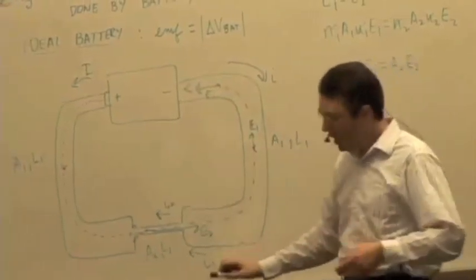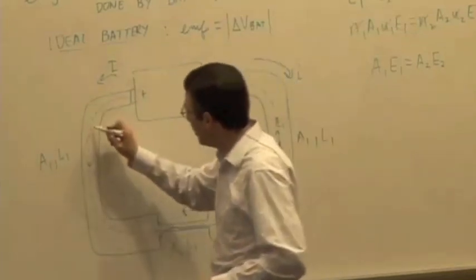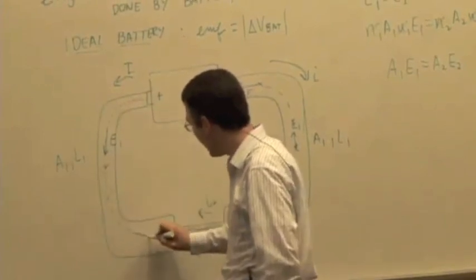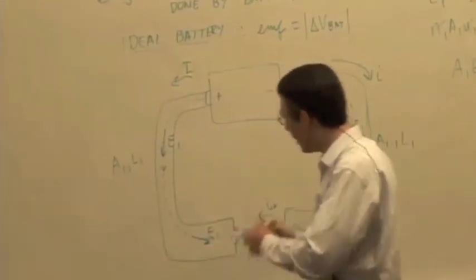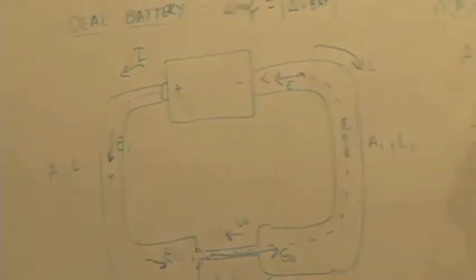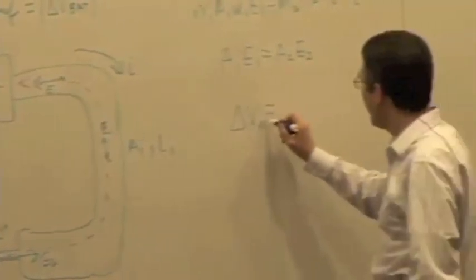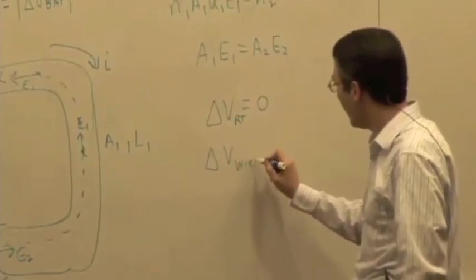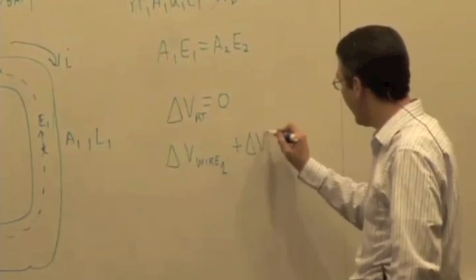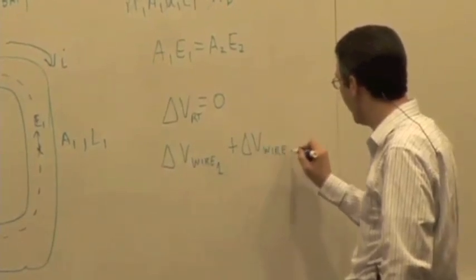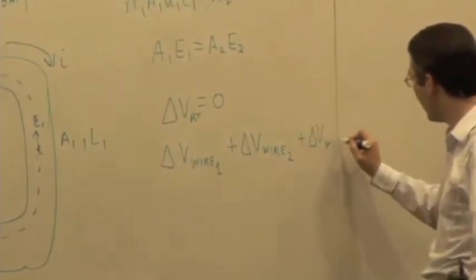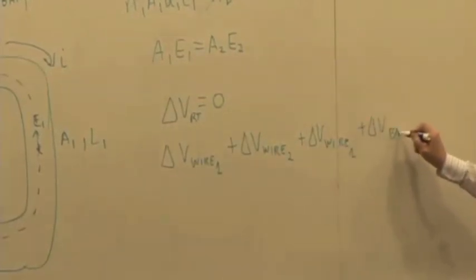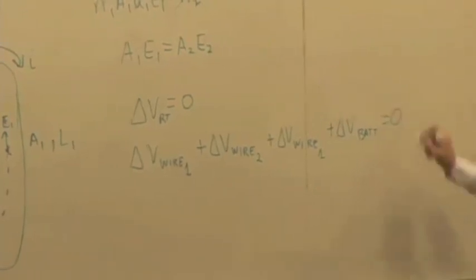And in the steady state, I know that, again, the electric field is always pointing in a direction parallel to my path. So that's E1, and then that's E1, and so forth. And so I would have, let's really just write it out. We have delta V round trip equal to zero. And so I'm going to have a delta V in wire one plus a delta V, wire two, plus a delta V in the second wire one, which I'll just label that wire one. It turns out to be the same, plus a delta V in the battery is equal to zero.